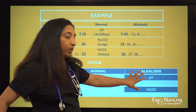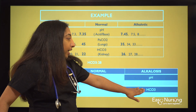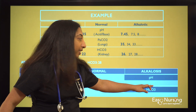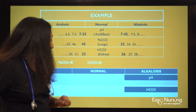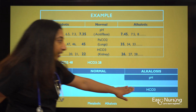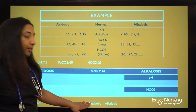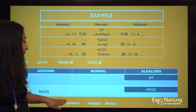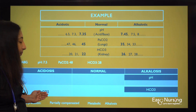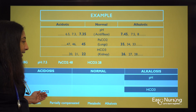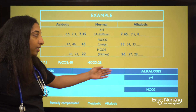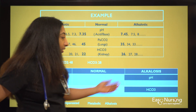We can now interpret. The problem is alkalosis. Since bicarb comes under alkalosis, we know it is metabolic. The interpretation is metabolic alkalosis, and it is partially compensated — we know this because PaCO2 is abnormal, meaning it is trying to bring that abnormal pH back to normal, but it couldn't because the pH is still abnormal.